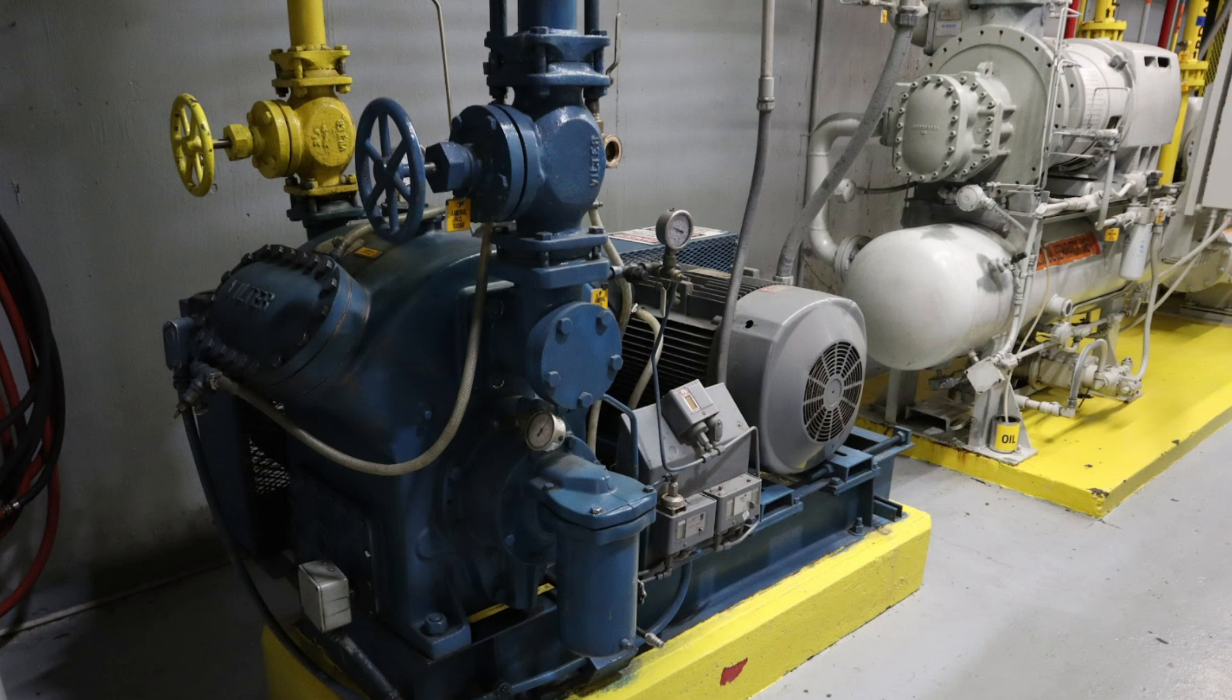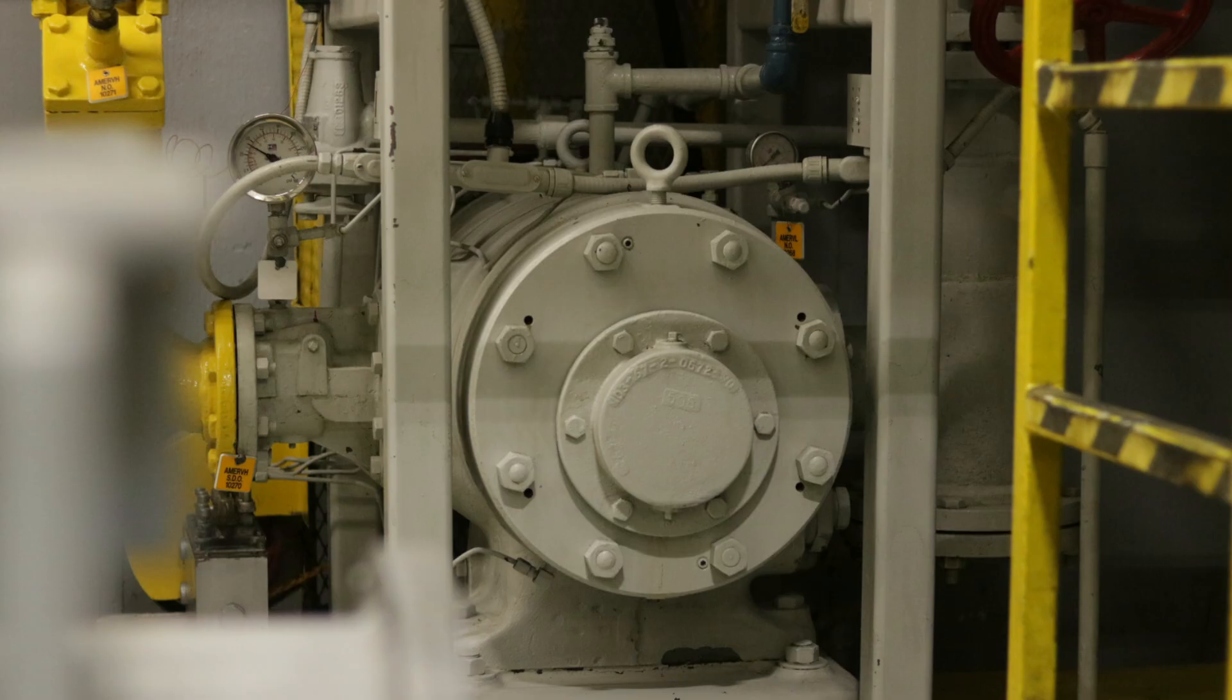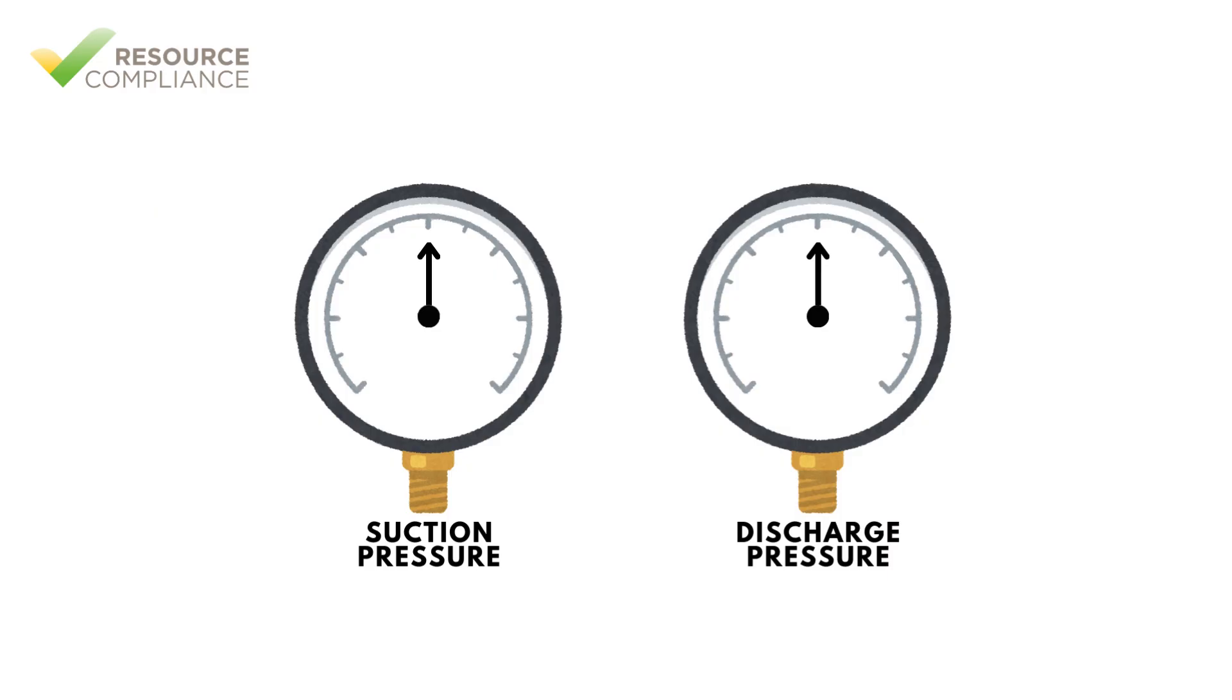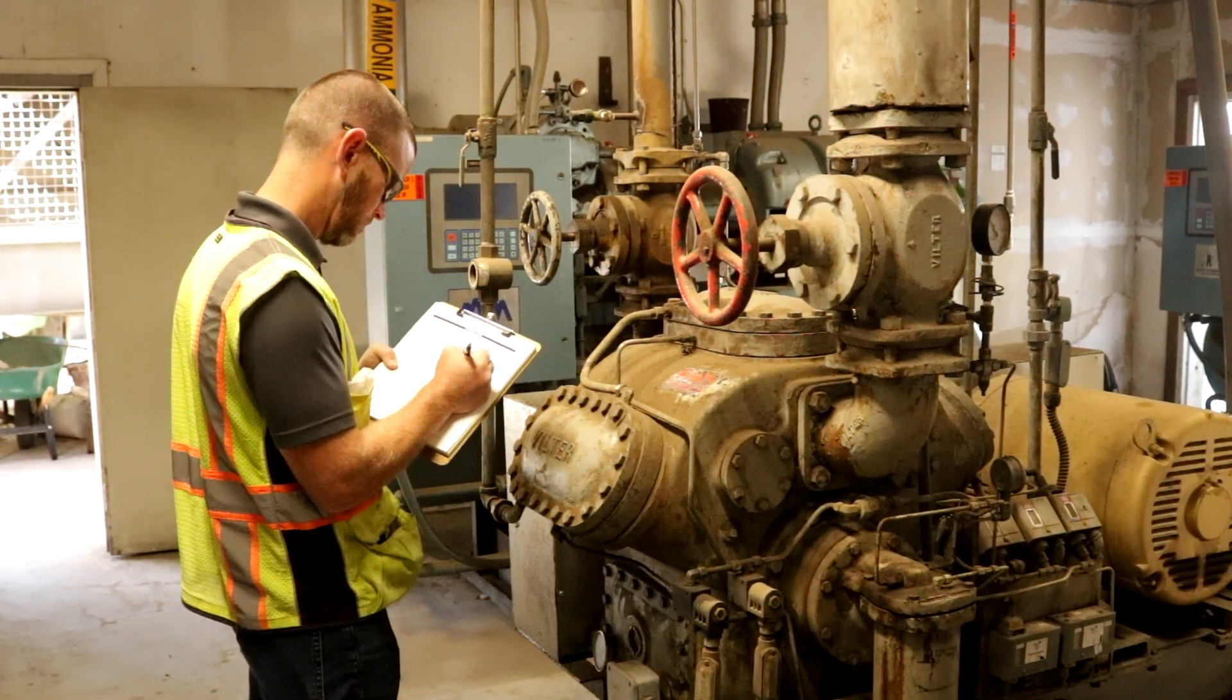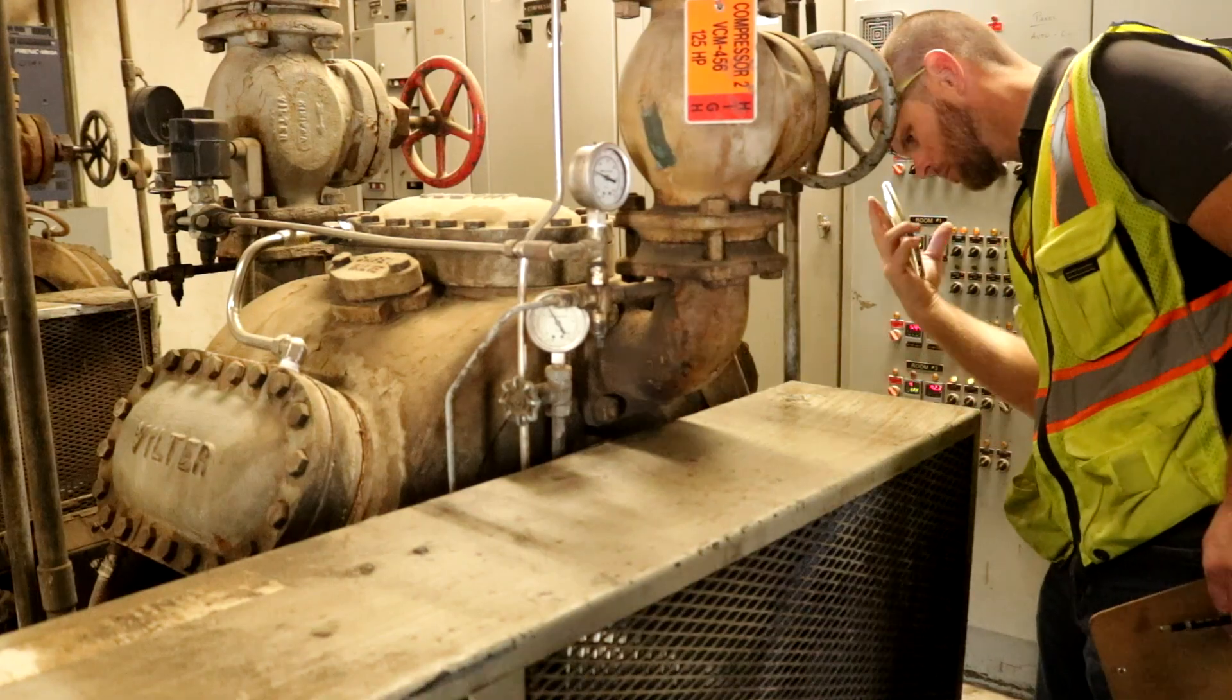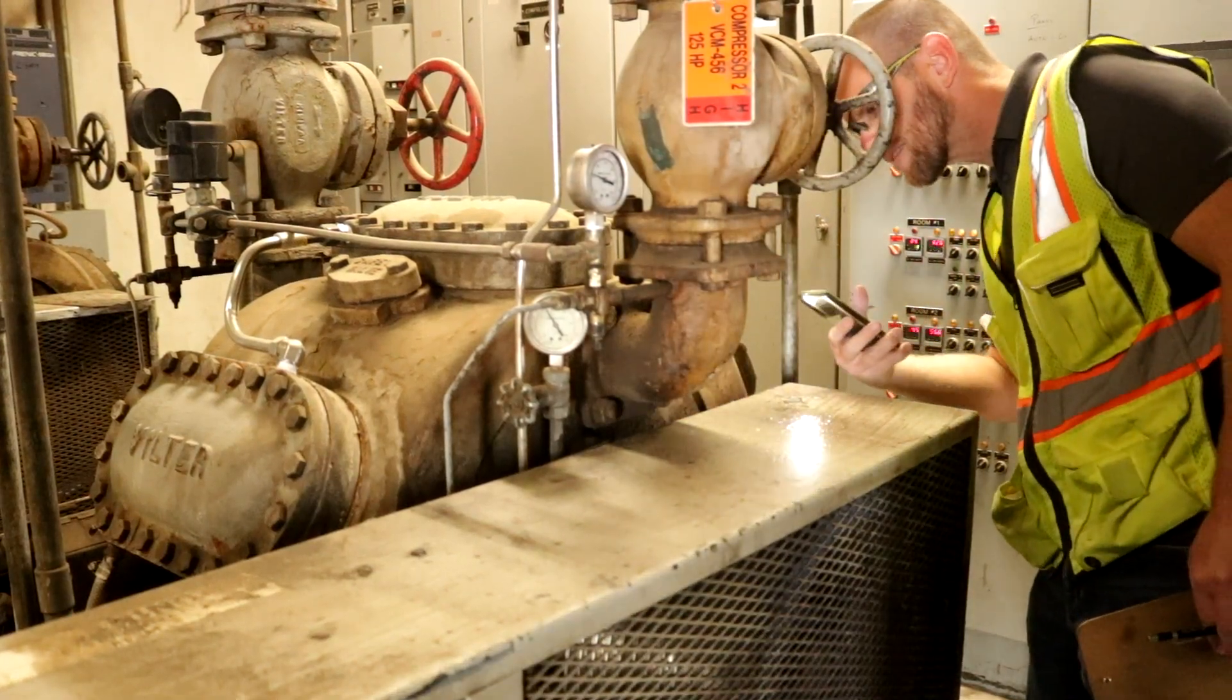Unfortunately, the compression process imparts heat into the refrigerant being compressed. This heat is called the heat of compression and is directly related to the compression ratio. A decrease in suction pressure or an increase in discharge pressure will result in a higher theoretical discharge temperature. High discharge temperatures increase friction and cause lubricating oils to break down, which result in wear and tear on the compressor.